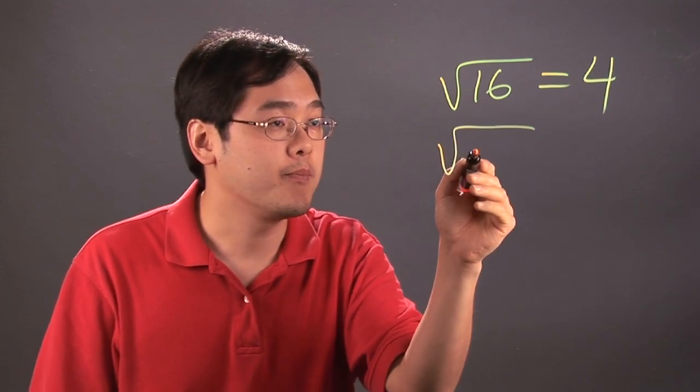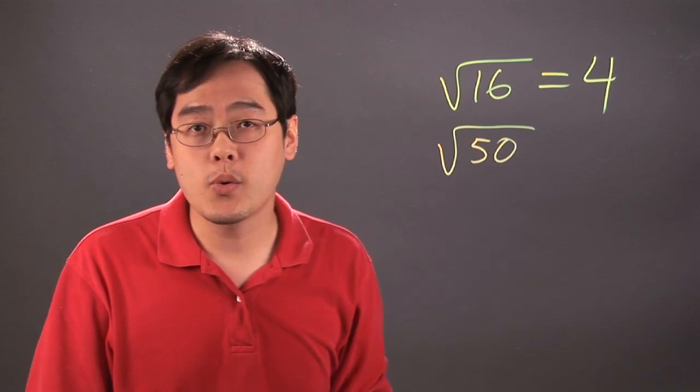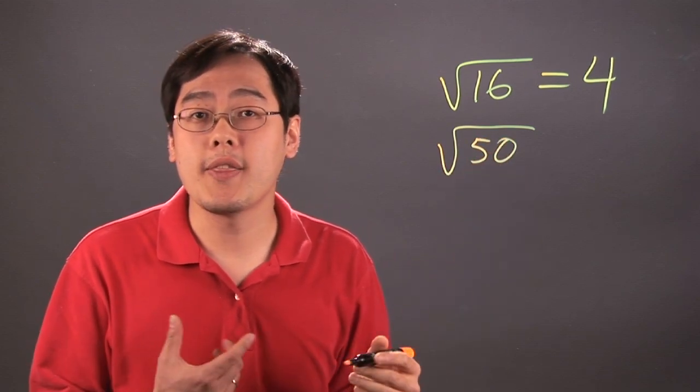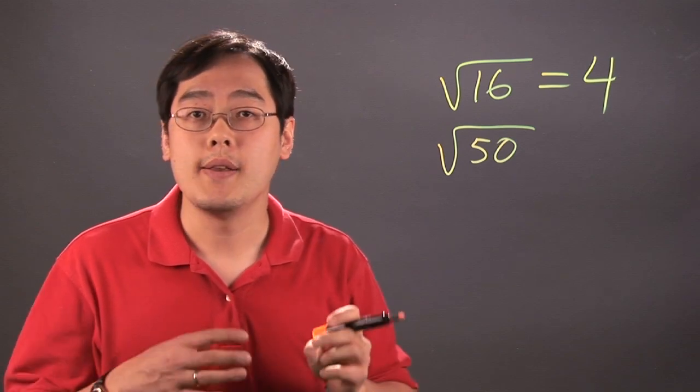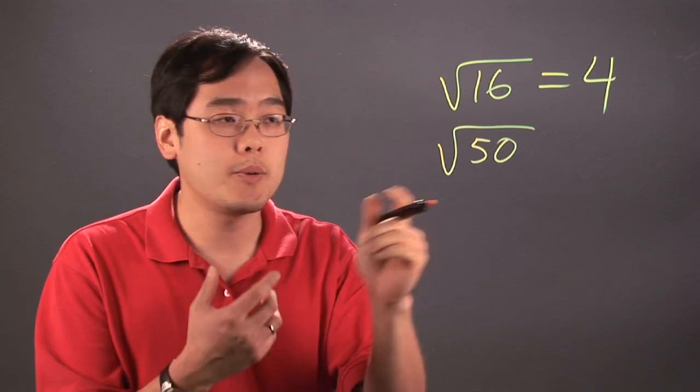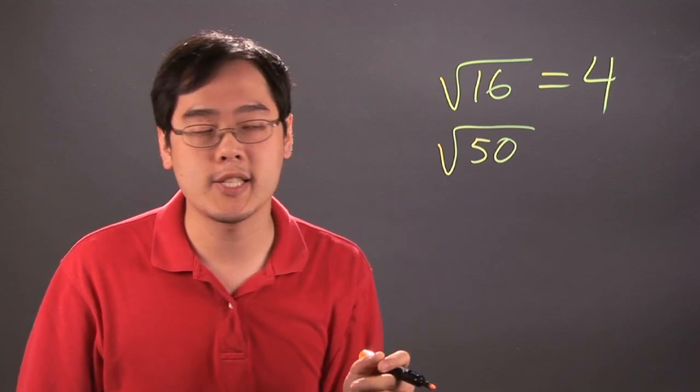If you have the square root of 50, you know it's not a perfect square, but what you can do is think about two numbers that multiply to give you 50, one of which is a perfect square. When it comes to breaking these numbers down, you want to think of the largest perfect square possible.